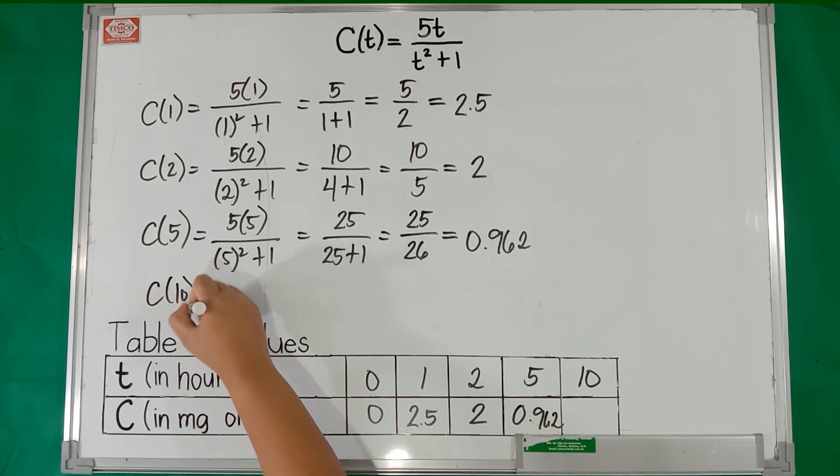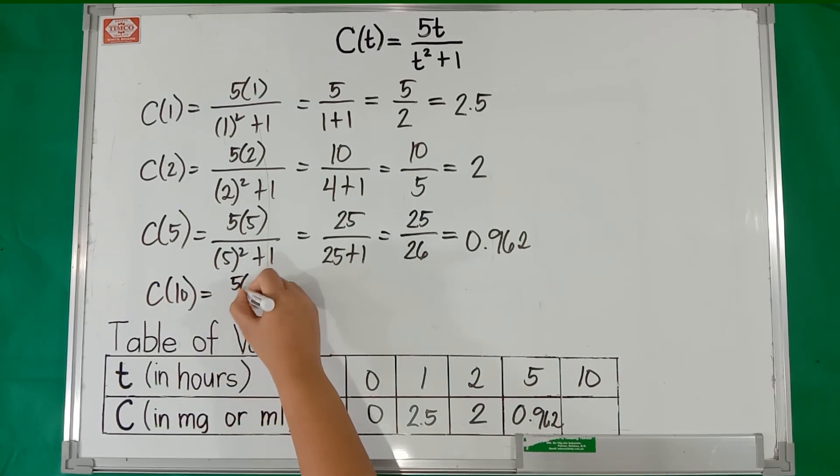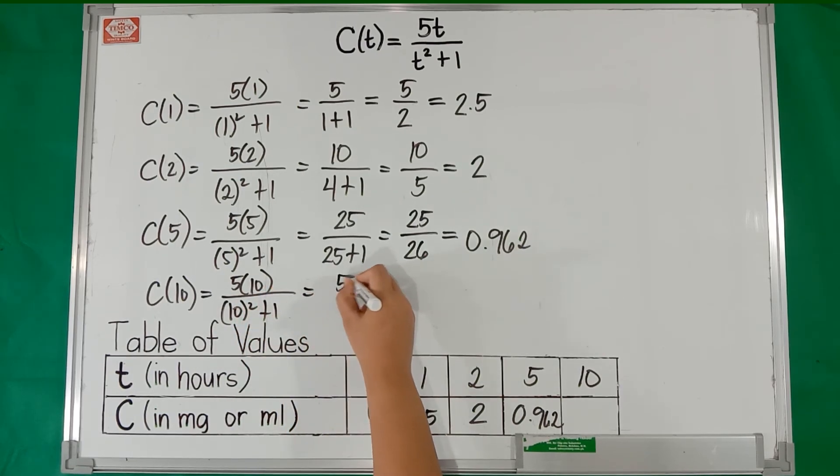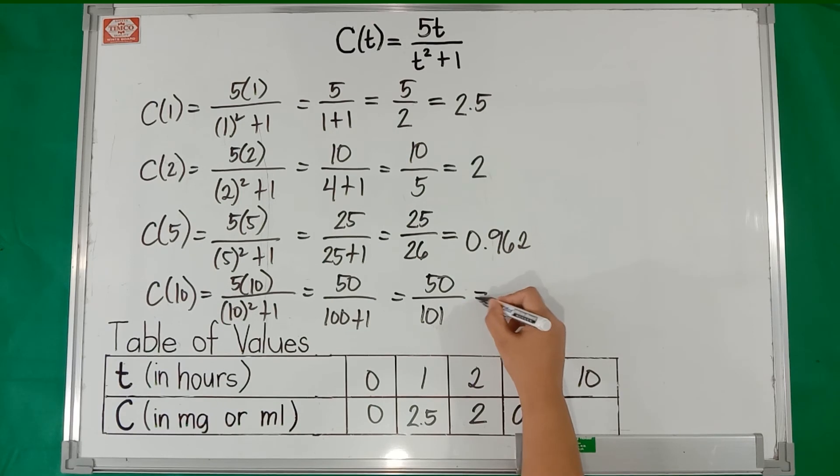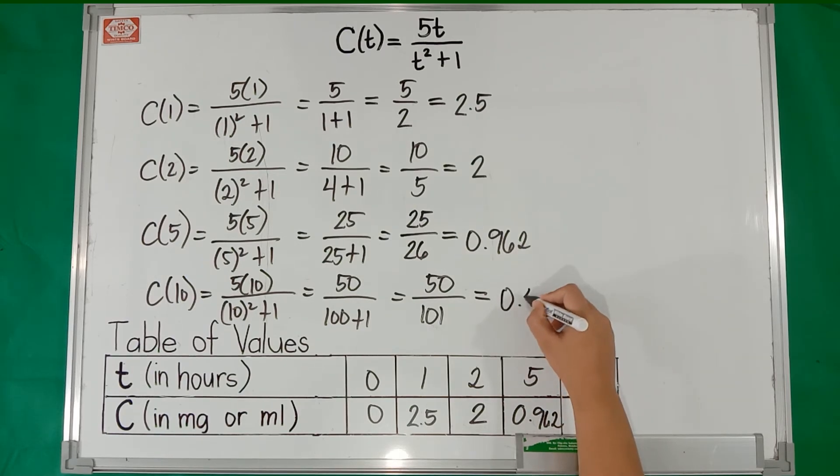Lastly, c(10) = (5 × 10)/(10² + 1). 5 times 10 is 50 over 10 squared is 100 plus 1. 50 over 100 plus 1 is 101 equals 50 divided by 101 is 0.495.